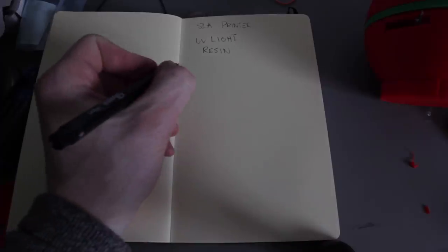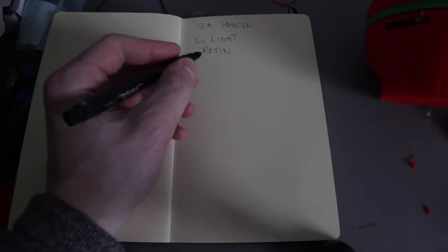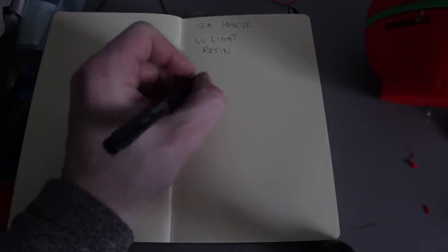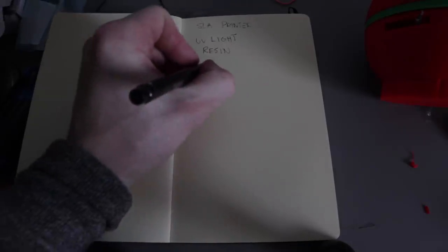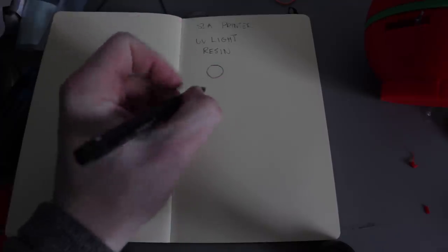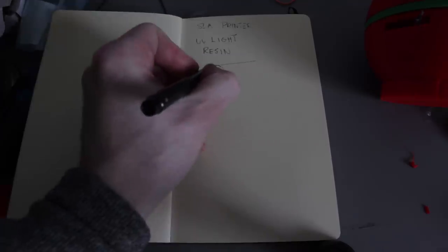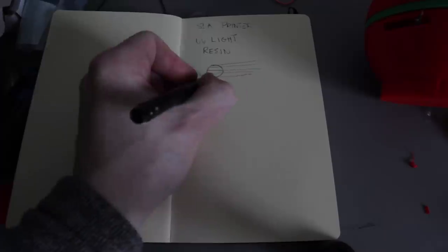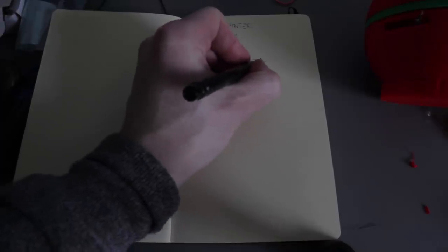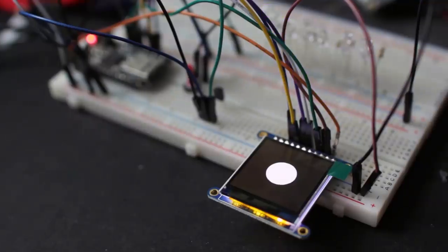The way it does that is it shines different layers of shapes into the liquid. So if you imagine a sphere, and you slice that into different layers, you're going to end up with different size circles representing the sphere in a 2D plane.